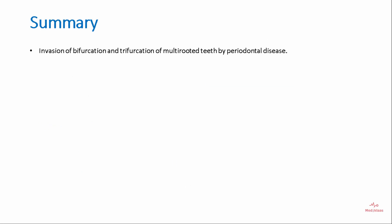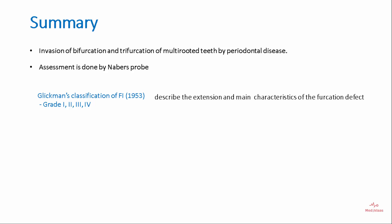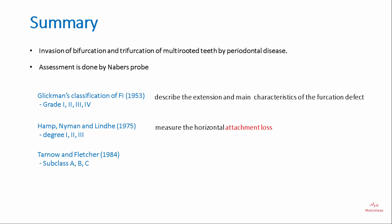To summarize: furcation involvement is the invasion of bifurcation and trifurcation of multi-rooted teeth by periodontal disease, assessed by a Nabers probe. Glickman's classification divides furcation involvement into 4 grades describing extension and main characteristics. Hamp, Nyman, and Linde's classification uses 3 degrees based on horizontal attachment loss. Tarnow and Fletcher's classification uses subclasses A, B, and C based on the vertical component.